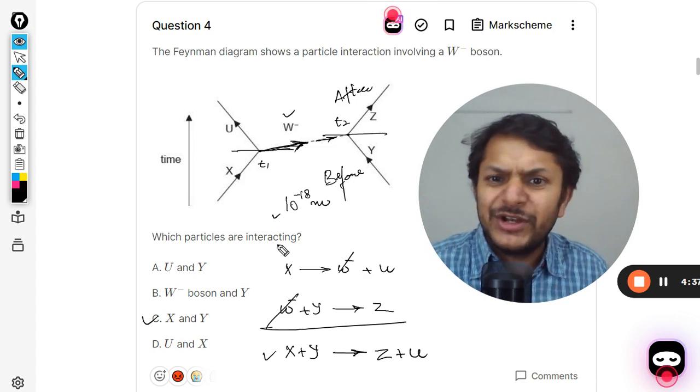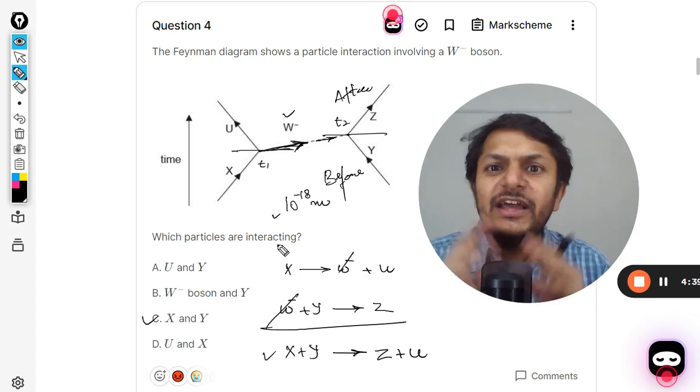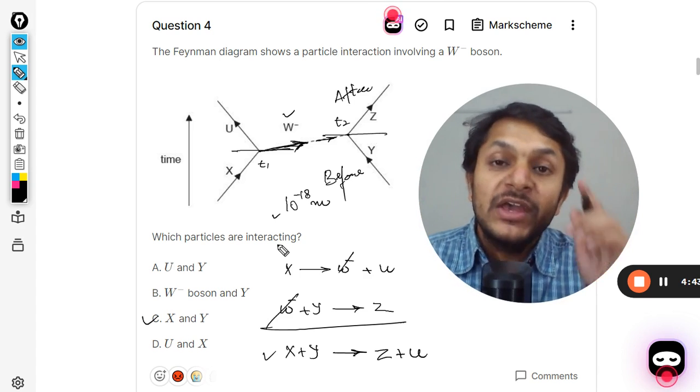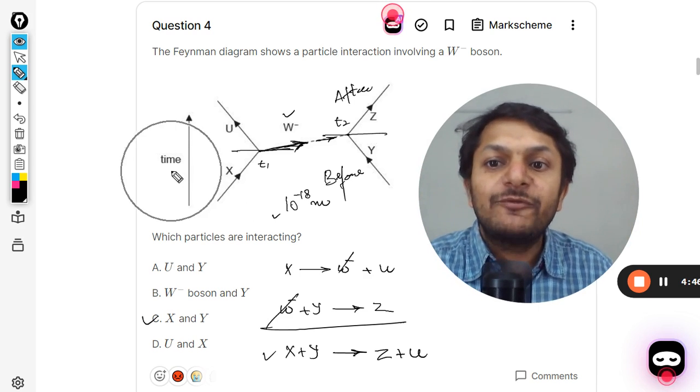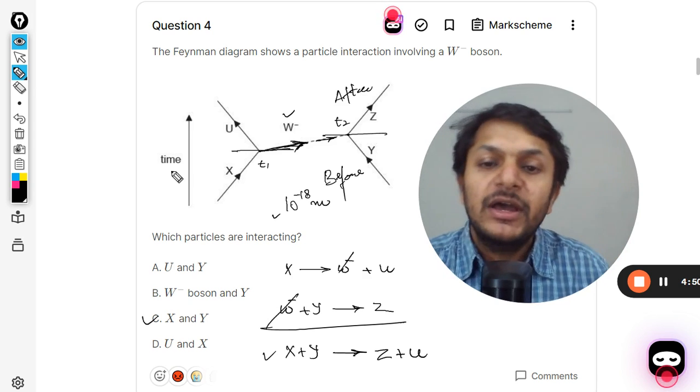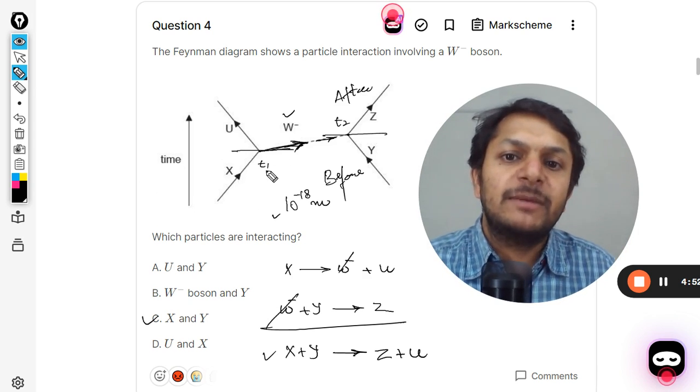So this is how we do this question, my student. I think the explanation is good enough. If you people are not able to understand anything, do let me know. Feynman diagrams: always remember, you have to first find the direction of time. This is your first step, and then you have to create the timestamps t1 and t2 to actually understand what is happening.